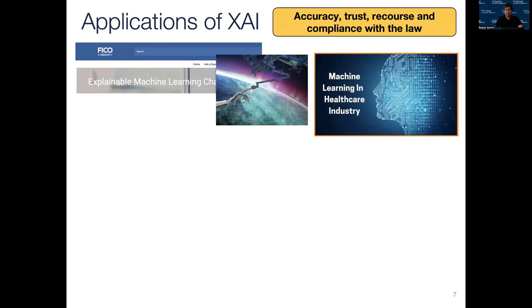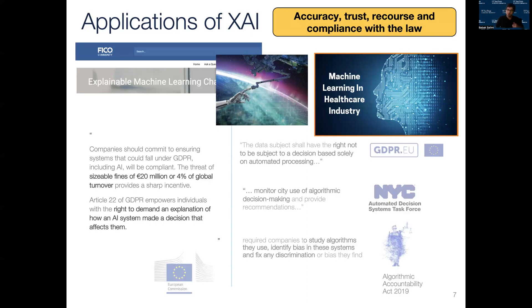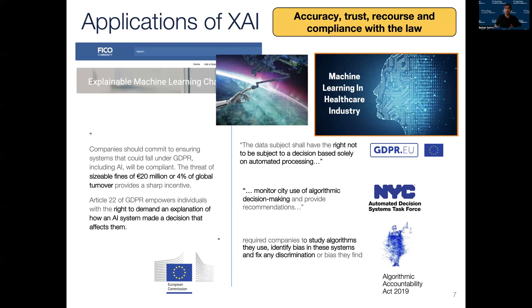Not only that, generating explanations is also now mandated by law. For example, the European Union GDPR empowers individuals with the right to demand explanations of how an AI system made the decisions that affect them. There are laws and bills in place across different countries and jurisdictions that require every organization that uses some form of AI in making decisions to explain how they generate particular outputs. So explainable AI is also important to ensure compliance with the law.